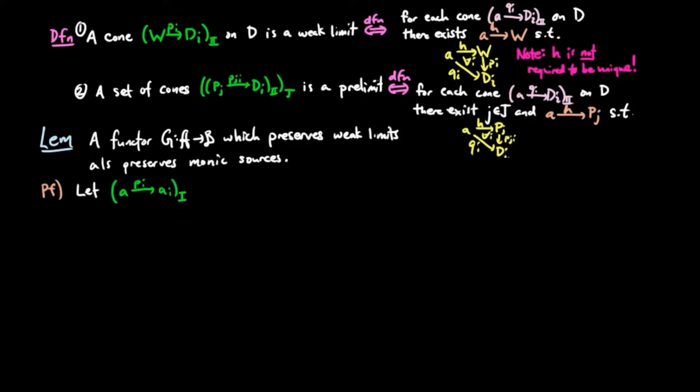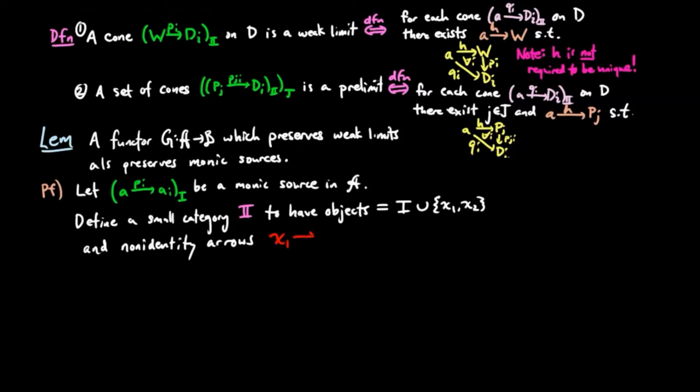let PI be a monic source in A. We define a small category I to have an object set equal to I union the two elements X1, X2, and let the only non-identity arrows be from X1 to I, X2 to I for each I.